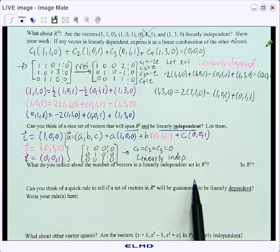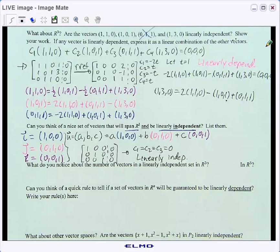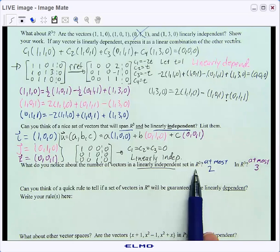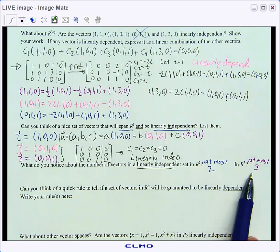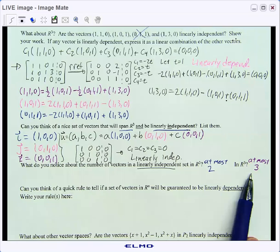Finally, for this video, what I want you to do is, what do you notice about the number of vectors in a linearly independent set in R² and in R³? Think about that and then we'll answer that question as we wrap up this video. Hopefully you notice that in R², we can have at most two vectors, and in R³ only three vectors and still have them be linearly independent.